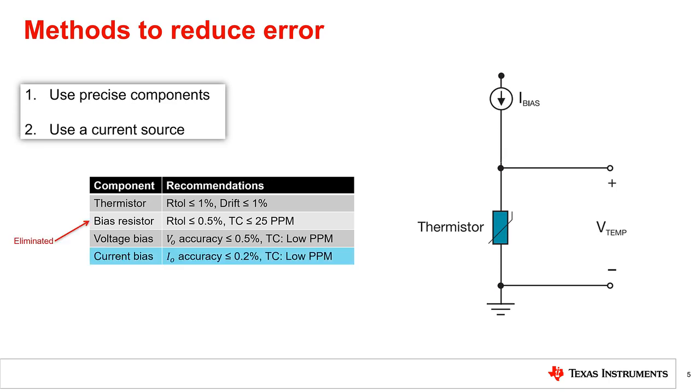To further increase the accuracy of your thermistor solution, we recommend using a constant current source rather than a constant voltage source. Doing so allows you to remove the bias resistor from the circuit, which eliminates a large source of error. It is important to use a precision current source to have less variation and therefore greater accuracy.